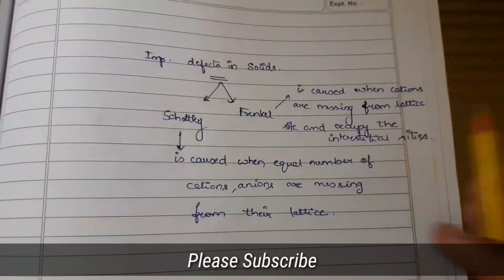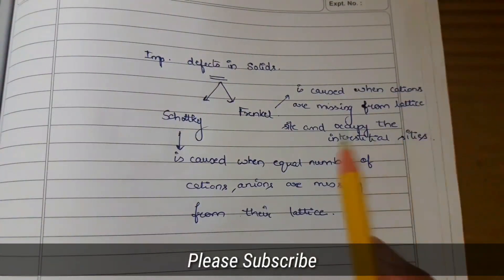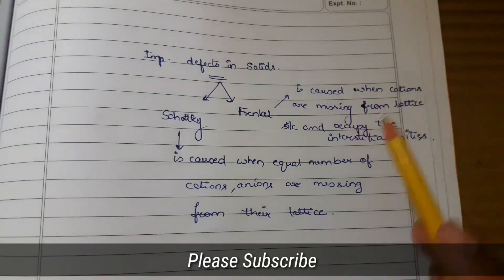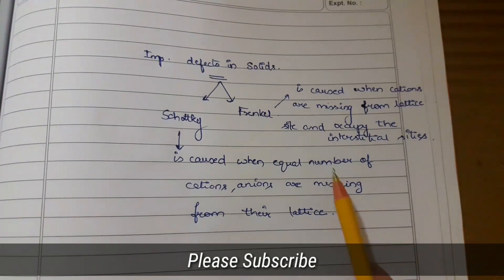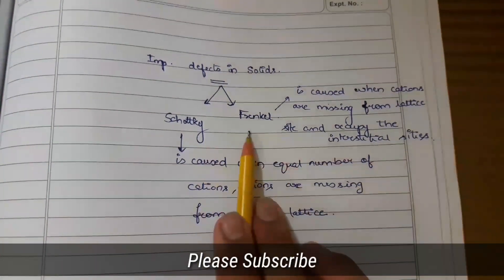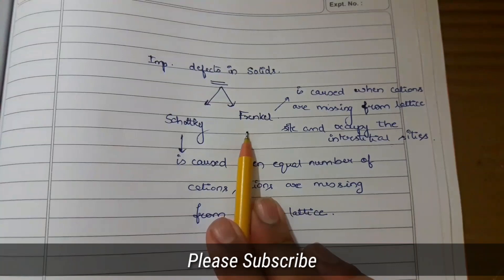In Frankel Defects, there will be void formed by missing only because of cations. And these cations will not be removed from the solid. They will actually occupy the interstitial sites. That type of defect is Frankel Defects.